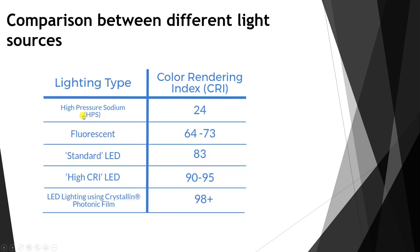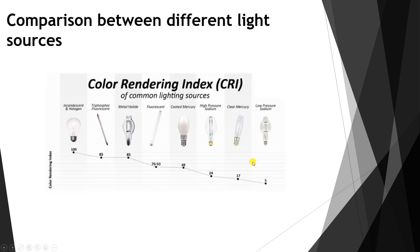Here is a comparison between different light sources — luminaires such as high-pressure sodium, fluorescent, LED, and others — showing their respective Color Rendering Index values. Incandescent and halogen lamps have a Color Rendering Index of 100, the highest value, closest to white light.